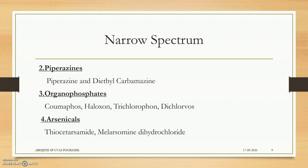Organophosphates include coumaphos, haloxon, trichlorfon, and dichlorvos. The next group is arsenical drugs, which contain arsenic. These include thiacetarsamide, melarsomine dihydrochloride — a name we may have heard in many places.